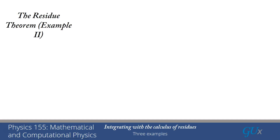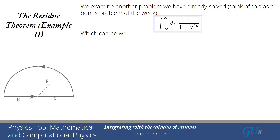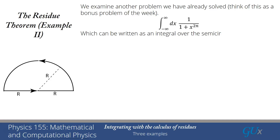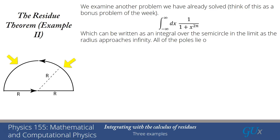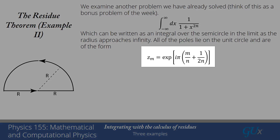In our second example, we extend this integral to an arbitrary even power, doing the integral from −∞ to +∞ along the real axis. This involves the same integral as before, but we take the limit as the radius goes to infinity. The integral over the circular arc part goes to zero as the radius goes to infinity, so we're left with just the integral over the real axis. We still have to look at all the poles inside the curve — they all lie on the unit circle, of the form zₘ = exp(iπ(m/n + 1/(2n))).